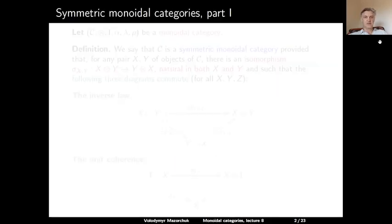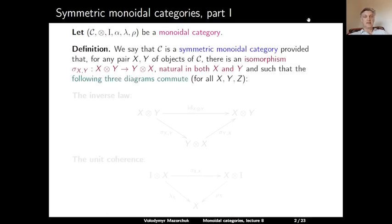We start from the definition of a symmetric monoidal category. Let C be a monoidal category with a tensor product, the identity object I, the associator alpha, and the unitors lambda and rho. Definition: we say that C is a symmetric monoidal category, provided that for any pair X and Y of objects in C, there is an isomorphism denoted sigma_{X,Y} from X tensor Y to Y tensor X. This isomorphism is supposed to be natural in both X and Y, and such that the following three diagrams commute for all involved objects.